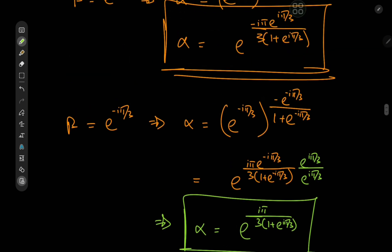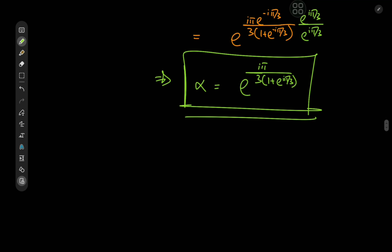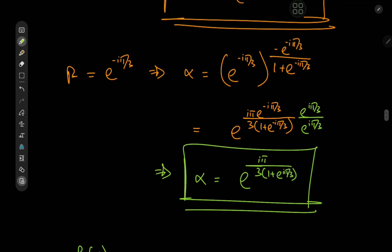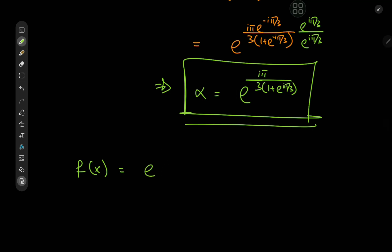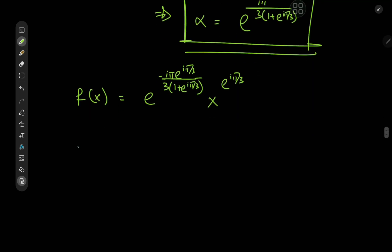So we have a couple of funky solutions to our differential equation. The first is f(x) = [e^(−iπ·e^(iπ/3)/3) / (1 + e^(iπ/3))] · x^(e^(iπ/3)), or alternatively f(x) = [e^(iπ) / (3·(1 + e^(iπ/3)))] · x^(e^(−iπ/3)). This thing in its very compact form looks kind of beautiful.